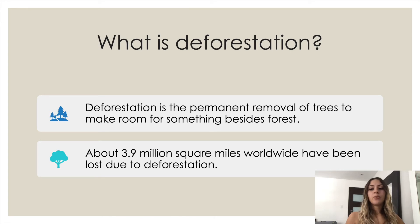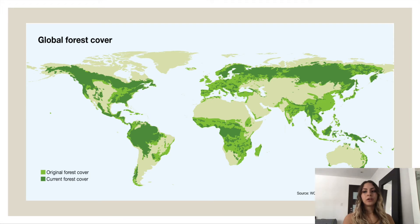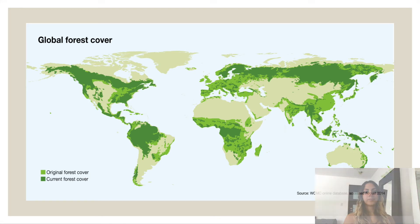About 3.9 million square miles of forest have been lost due to deforestation. As you can see here, the original amount of forest cover is represented by the lighter green color, and the current forest cover is represented by the darker green. In places like Africa and Europe, you can see a gradual decrease in forest matter.